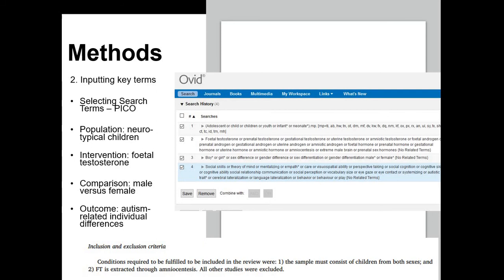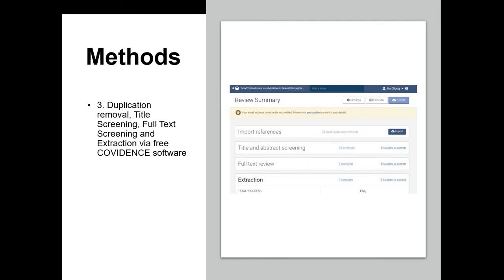The outcome had to do with autism-related individual differences. Not just autism symptoms, but also autism-related cognition. Restricted interest is one of the things we talked about. Also social relationship, communication, social perception, vocabulary, eye gaze. These were all fair game.